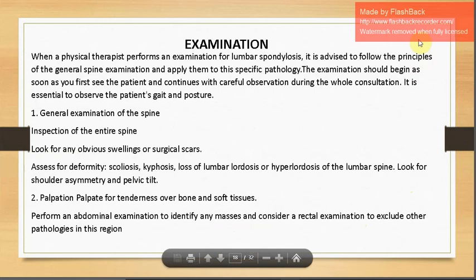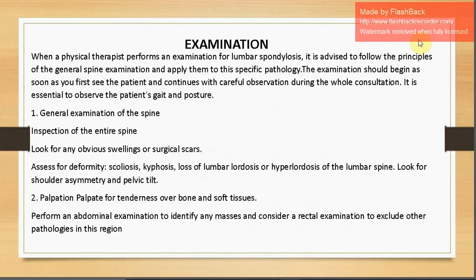For examination, the physical therapist should follow the principles of general spine examination applied to the specific pathology. The examination should begin as you see the patient, with careful observation throughout: gait, posture, limb attitude, pelvis level, shoulder level, scapular level, and the lordotic or kyphotic curves of the spine. During inspection, look for swellings, surgical scars, deformities such as scoliosis, kyphosis, loss of lumbar lordosis, hyperlordosis, shoulder asymmetry, and pelvic tilt.